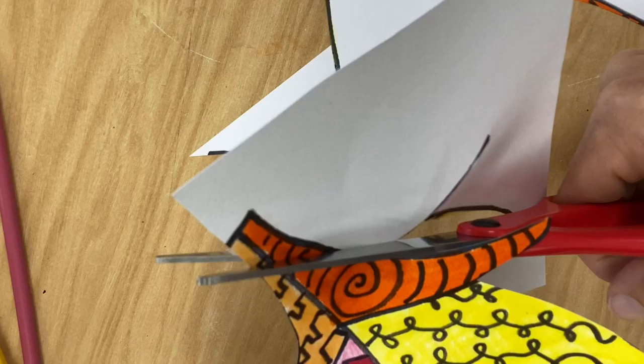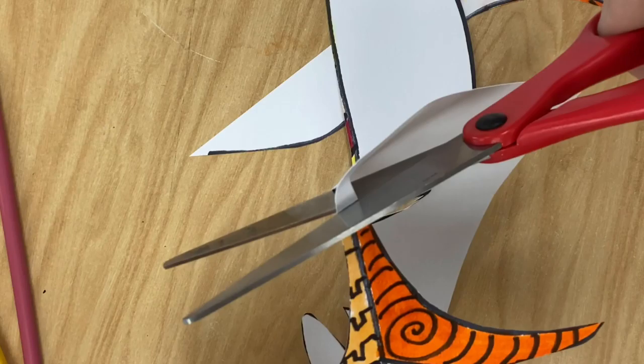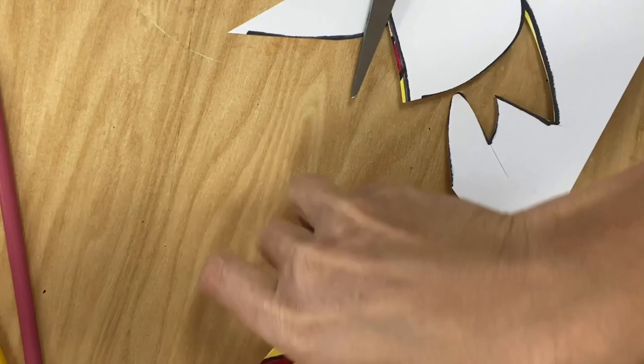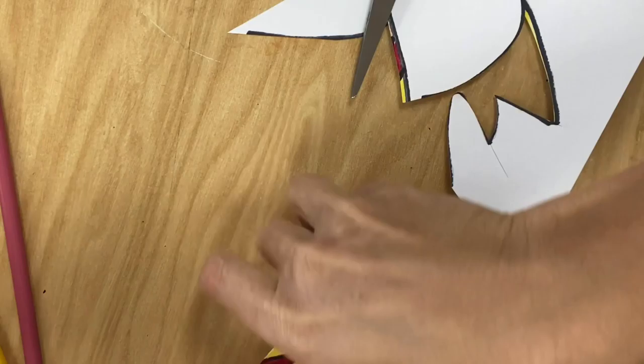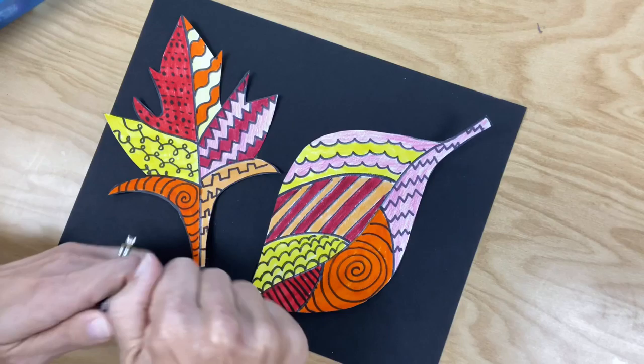Okay, once you have both your leaves cut out, leaving no white edges, nice and clean and crisp, you are going to take your glue stick and your black piece of construction paper, eight and a half by eleven, and you are going to glue down your warm colored leaves to the black piece of paper.